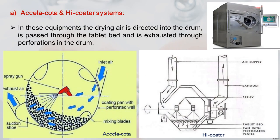In this equipment, drying air is directed into the drum, passes through the tablet bed, and is exhausted through perforations in the drum. Heated air enters, passes through the tablet bed, and the exhaust air carries moisture with it. The heated air collects and goes through the exhaust port, taking away moisture, increasing drying efficiency.